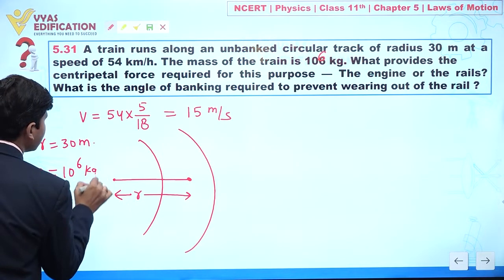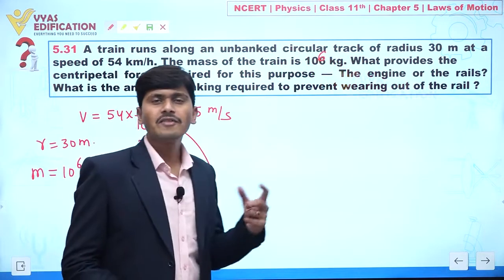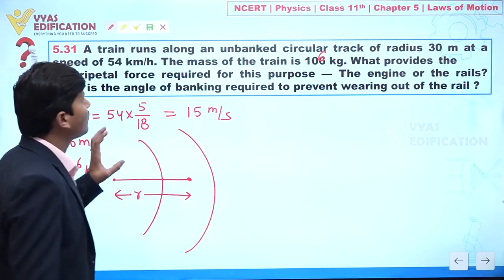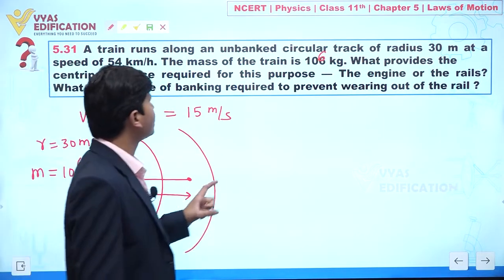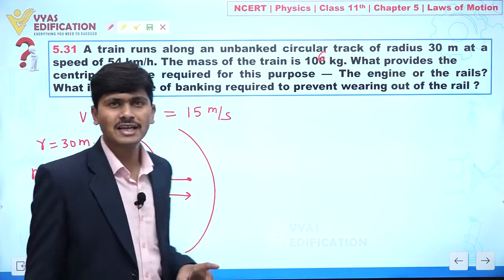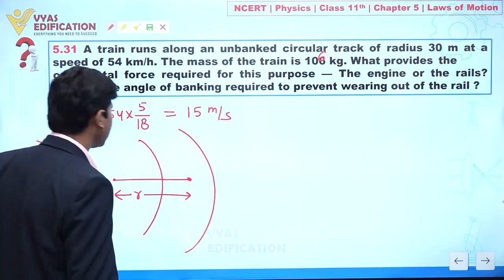Now in this question it is asking: what provides the centripetal force required for this purpose, the engine or the rails? Let us try to understand. Let us suppose this is a railway track.